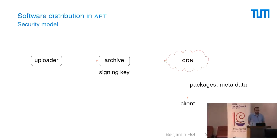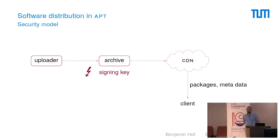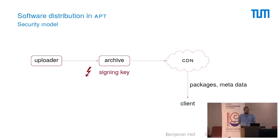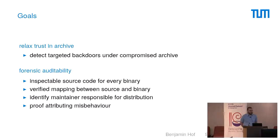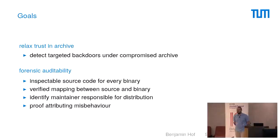That's achieved by the archive signatures. However, the archive signing key is all powerful. So if anything should happen to this signing key, that would be big trouble. And of course we also trust our uploaders to only upload the appropriate software. So how can we improve the situation? We are going to approach this with two goals in mind. The first is to reduce or relax the trust in the archive — what we would like to achieve is that it's impossible, even if the archive is compromised, to deliver malicious packages to specific users.